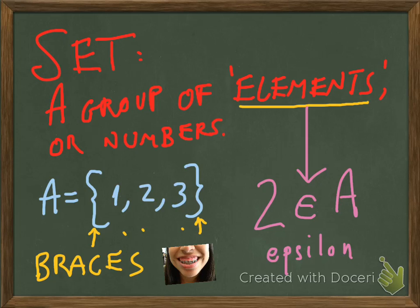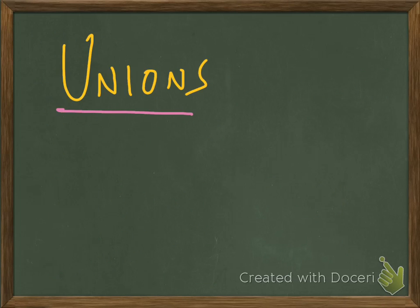So the first thing that I wanted to talk about in terms of the ways that we're going to combine sets is unions. Union basically just means you're going to add everything together in both sets. So I'll give you an example of that.